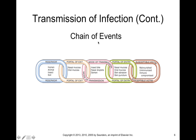This slide shows the chain of events that can occur for the transmission of infection or disease. First, we need a reservoir — areas where a microorganism can persist in the environment. Humans can be reservoirs; HIV is an example. Animals can be reservoirs for zoonotic diseases. Insects like arthropods and mosquitoes can be reservoirs, as well as soil. Bacillus anthracis, or anthrax, normally exists in our soil.